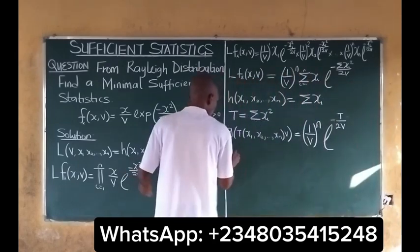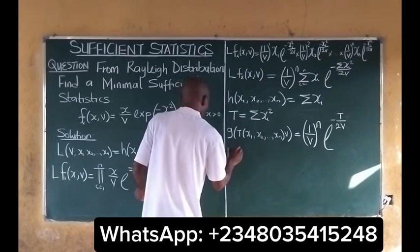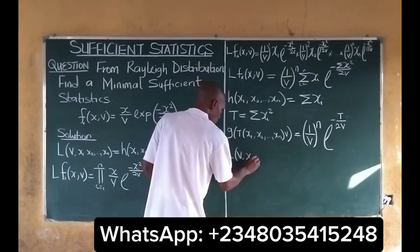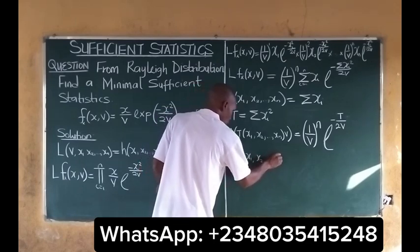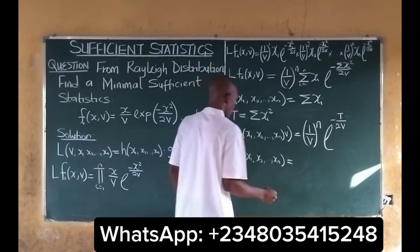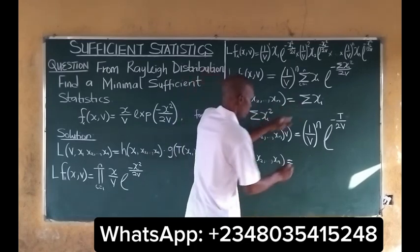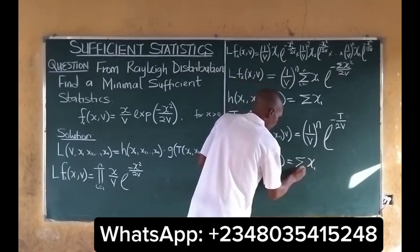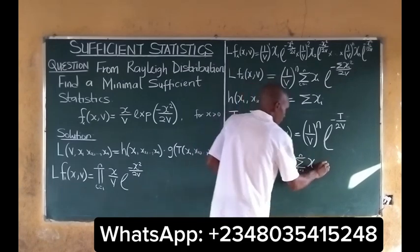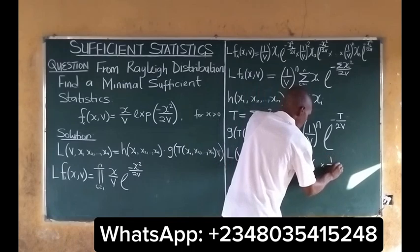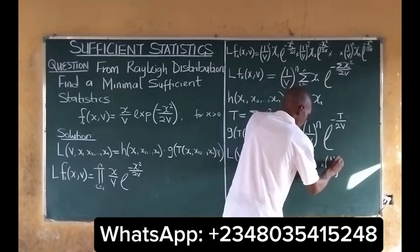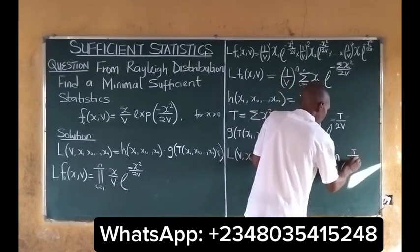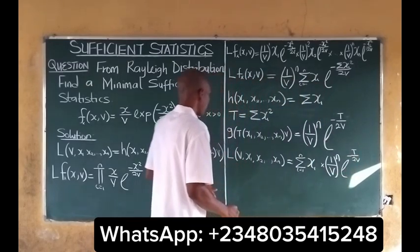So we can write our sufficient statistic as: L(v; x1, x2, ..., xn) equals the summation of xi for i running from 1 to n, multiplied by 1 over v raised to the power n, times exponential of negative T over 2v. So this is how we can write it.